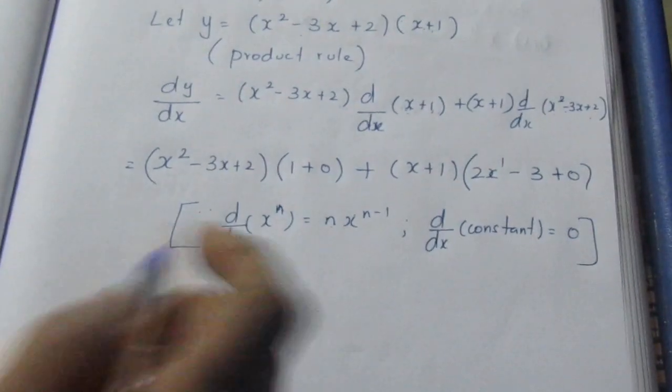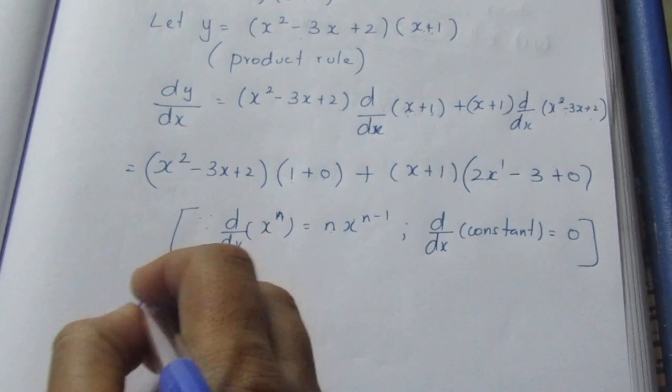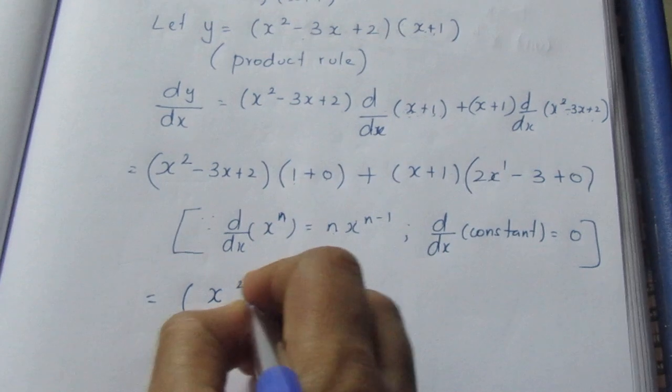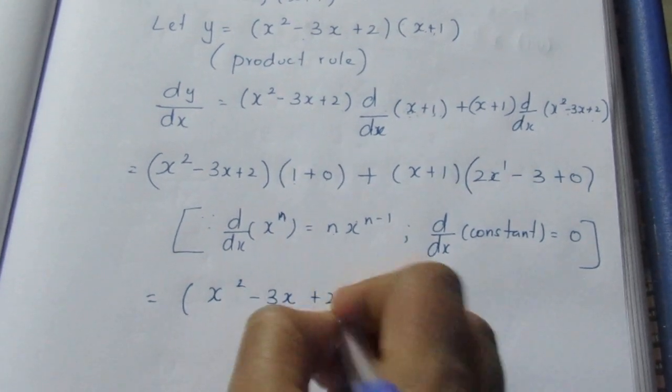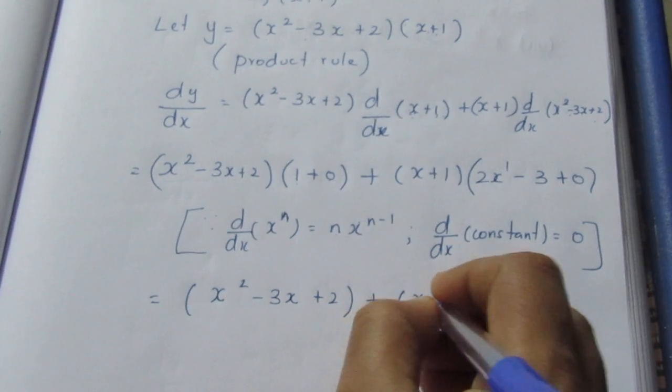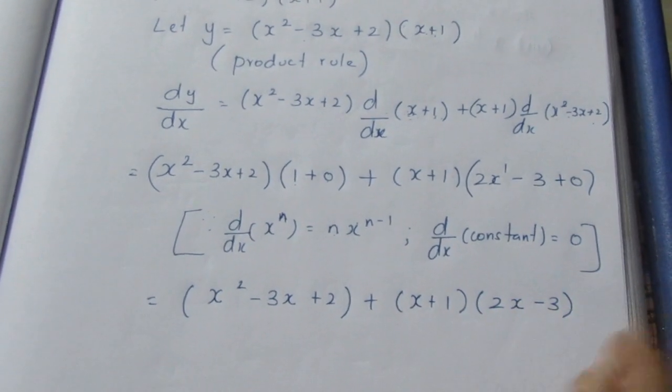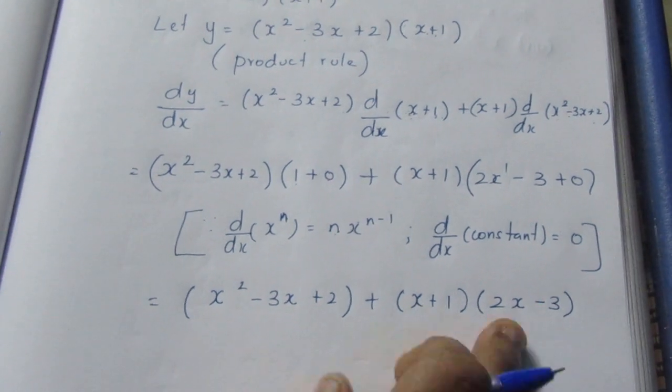Now substituting: (x² - 3x + 2)(1) + (x + 1)(2x - 3). We will solve this.